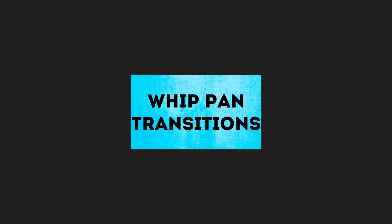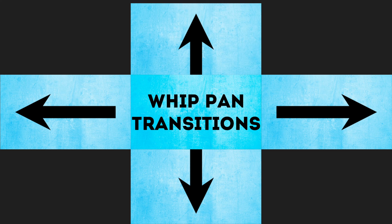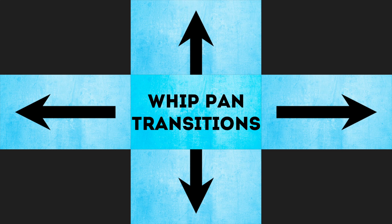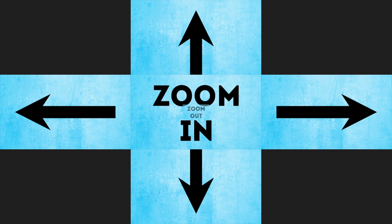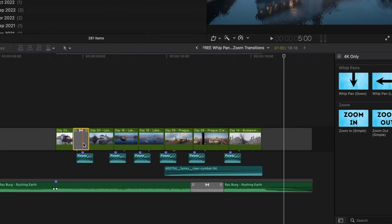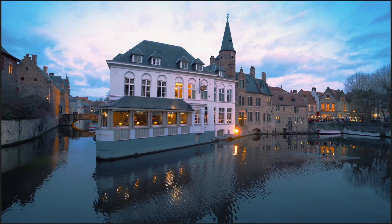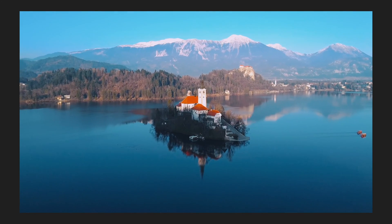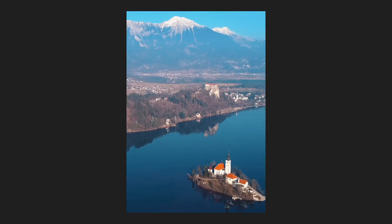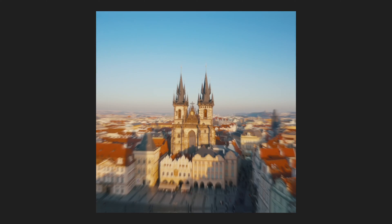What's in this free pack? Four whip pan transitions — down, left, right, and up — and two zoom transitions: zoom in and zoom out. These transitions are easy to use drag-and-drop transitions, optimized for 16x9 projects, vertical projects for Instagram and TikTok, and square projects for Facebook videos.